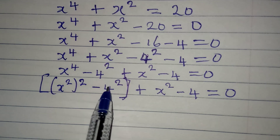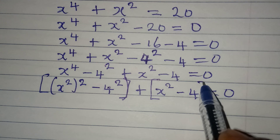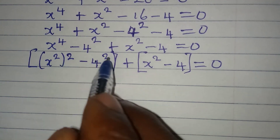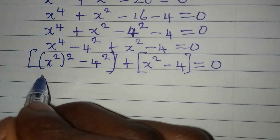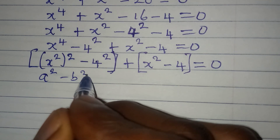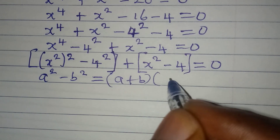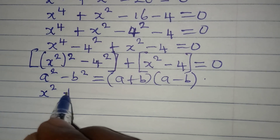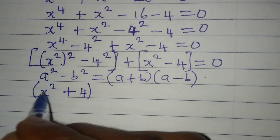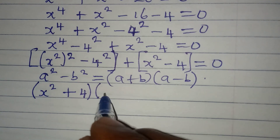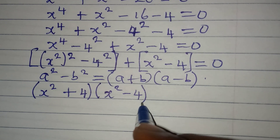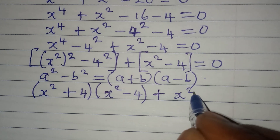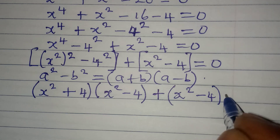Now I'm going to group and factorize each part. We have a difference of two squares: according to the difference of two squares rule, a squared minus b squared gives a plus b times a minus b. Applying that here, we get x squared plus 4 times x squared minus 4, plus x squared minus 4, equals 0.